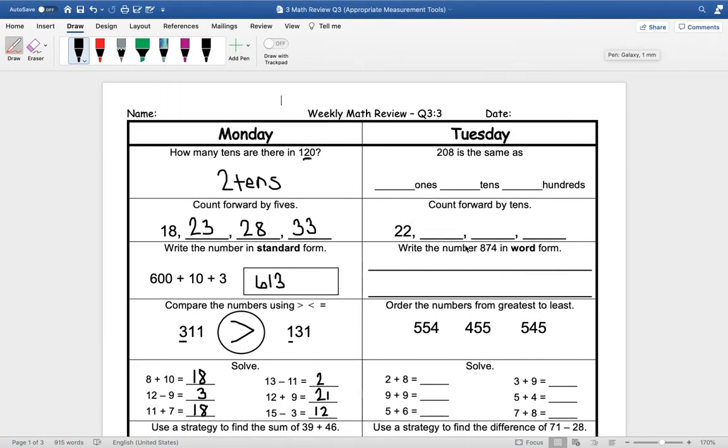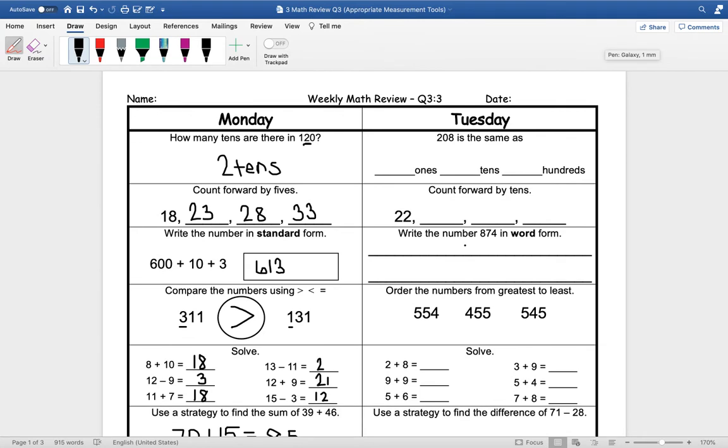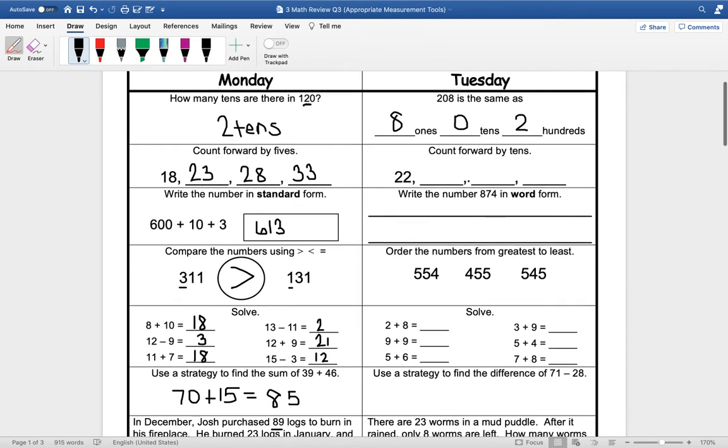Hey guys, we are going to look at Tuesday's power review. Our first question is 208 is the same as. So we have eight ones, we have zero tens, and we have two hundreds.